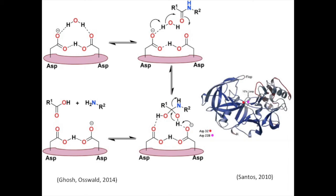Binding to this region is modulated by a glycine residue on the 10S loop of BACE-1, which forms a hydrogen bond with the substrate.